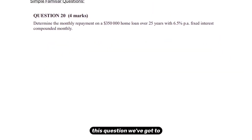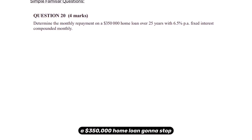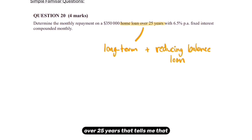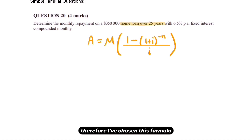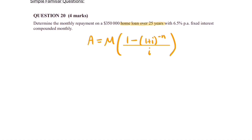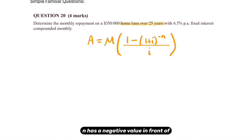The first question: determine the monthly repayments on a $350,000 home loan. Because it's a home loan over 25 years, that tells me it's going to be a long-term reducing balance loan. Therefore I've chosen the annuity formula where N has a negative value in front of it, indicating the balance is going down.